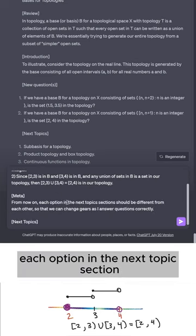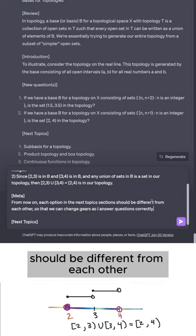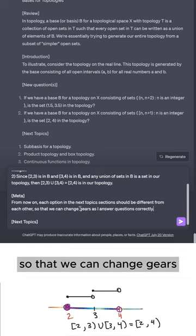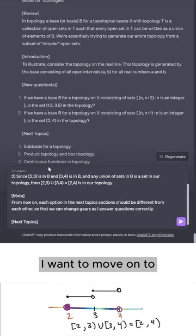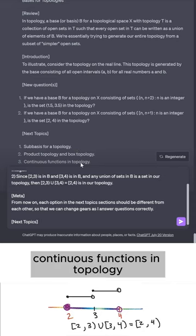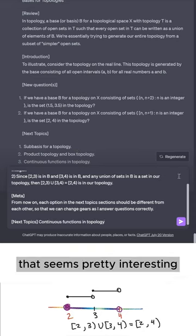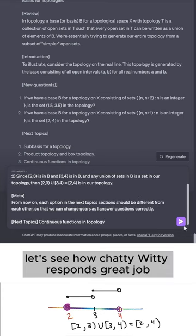So I'm going to say from now on, each option in the next topic section should be different from each other so that we can change gears as I answer questions correctly. With that said, however, I want to move on to continuous functions in topology. That seems pretty interesting. Let's see how ChatGPT responds.